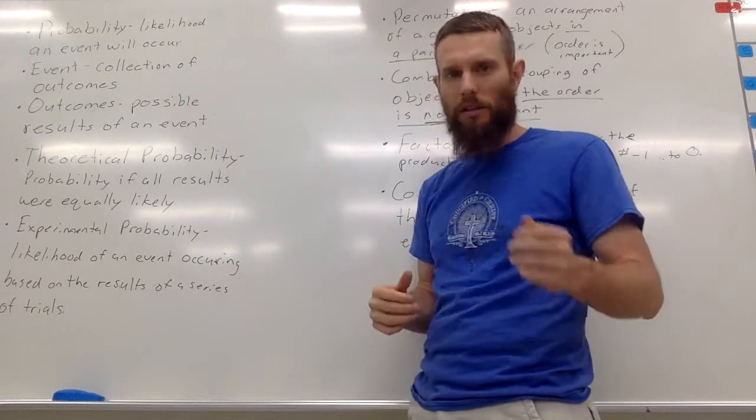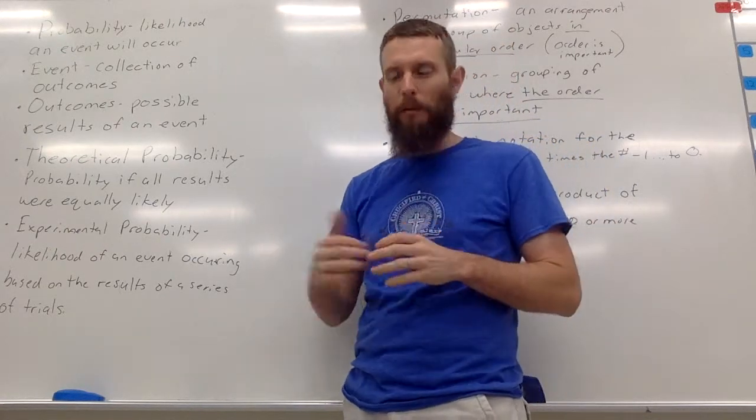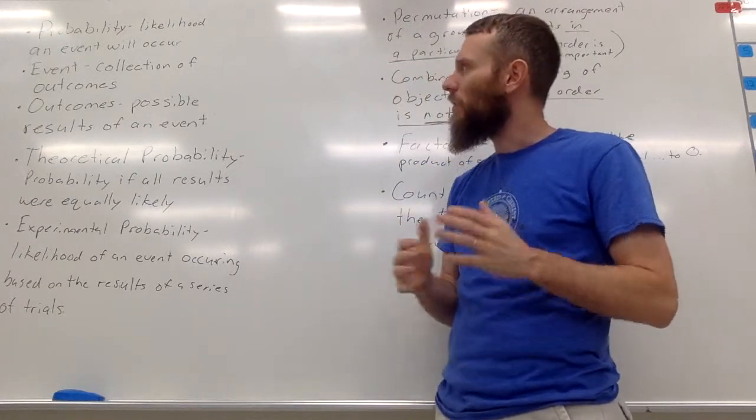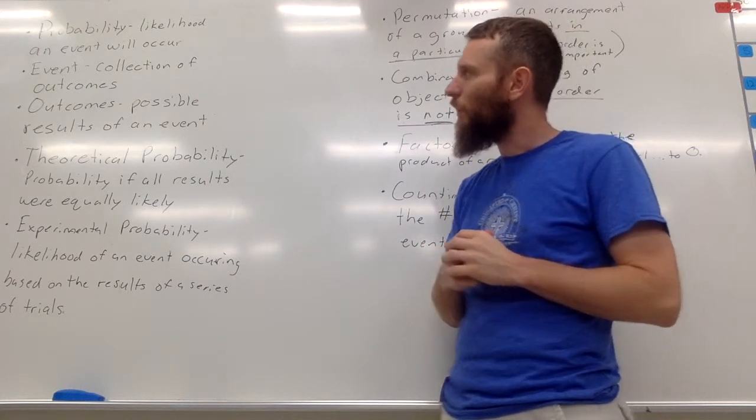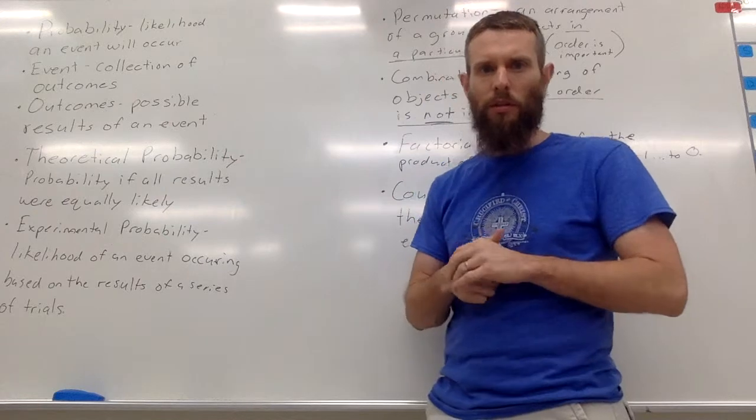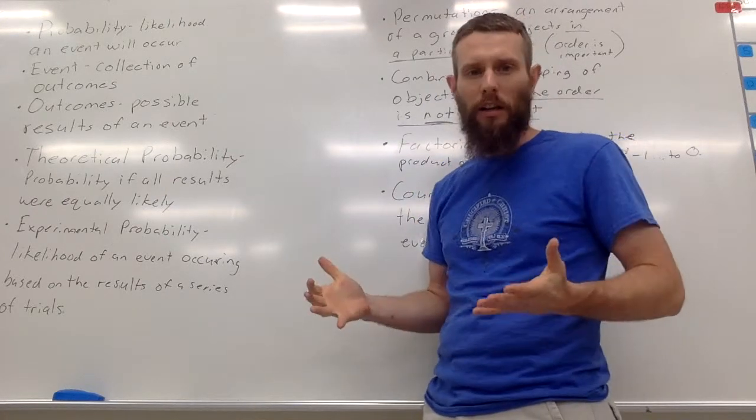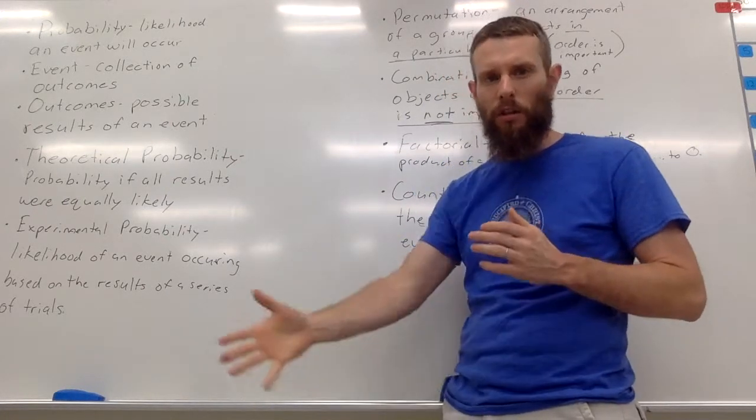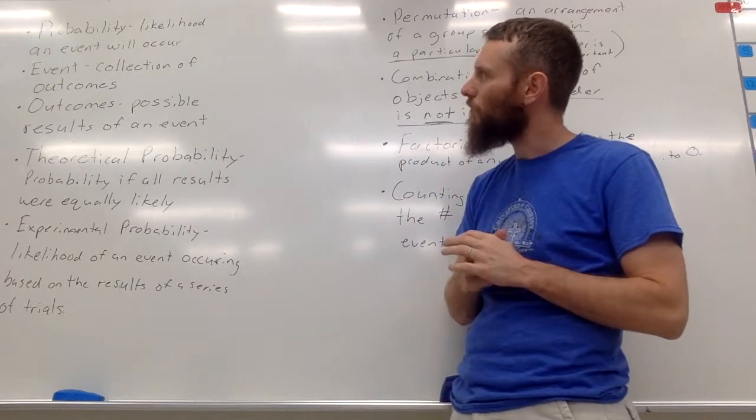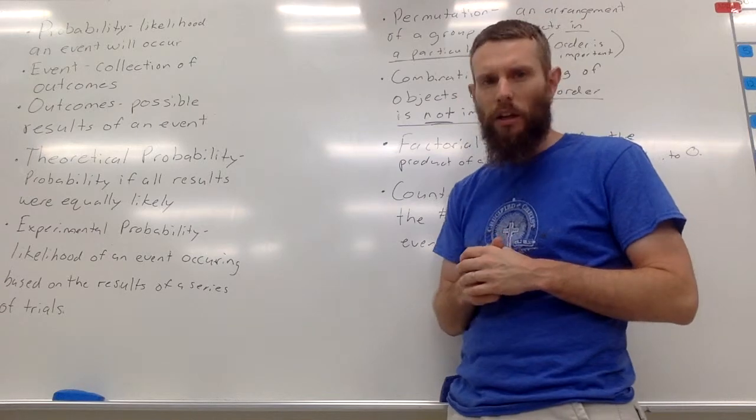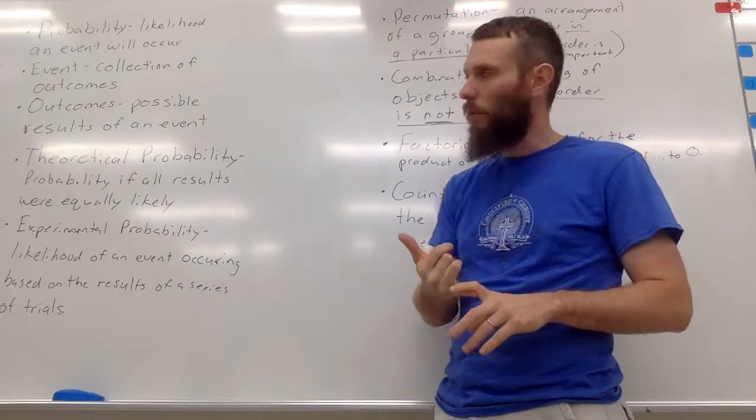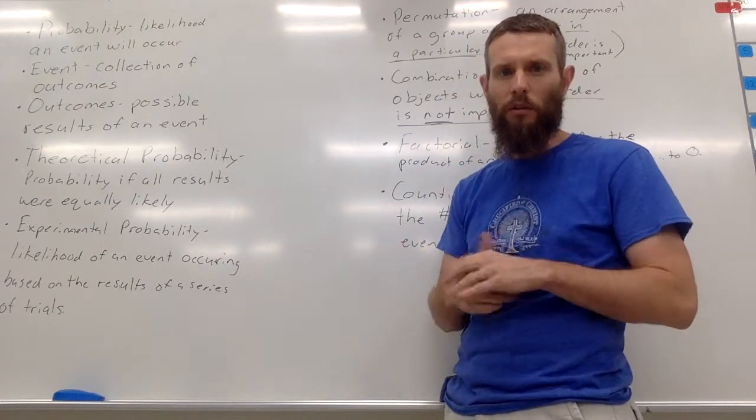Okay, so let me just use an example for this. I roll a die, a six-sided die, and the different outcomes or the possible results, the event, actually let me back up, the event is the rolling of the die, that's the event. And so the outcomes, it could land with one, two, three, four, five, or six up.